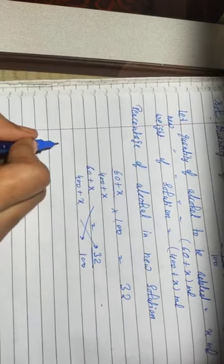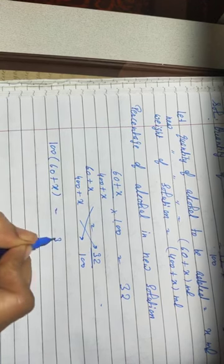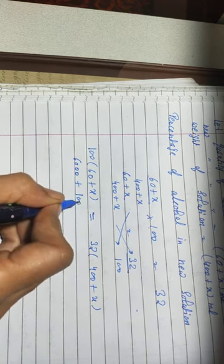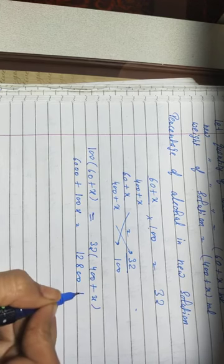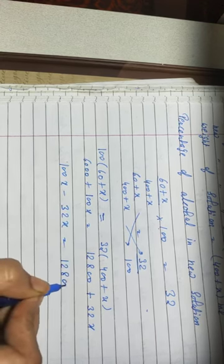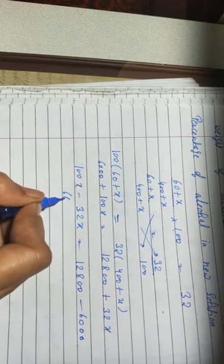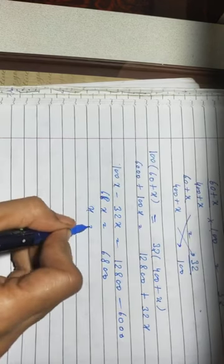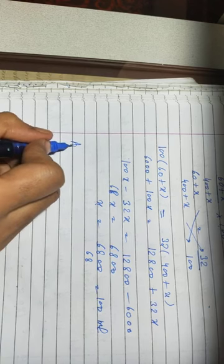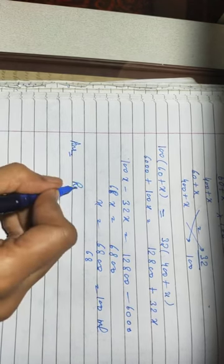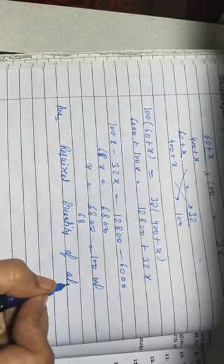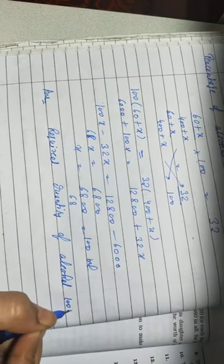Solving by cross multiplication: 100 times (60 plus x) equals 32 times (400 plus x). Open the brackets and solve carefully. Transposing like terms: 32x to the left-hand side gives 68x, and 6000 to the right-hand side gives 6800. So 68x equals 6800, and x equals 6800 divided by 68, that is 100 ml. The required quantity of alcohol to be added is 100 ml.